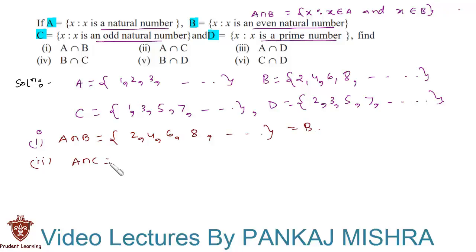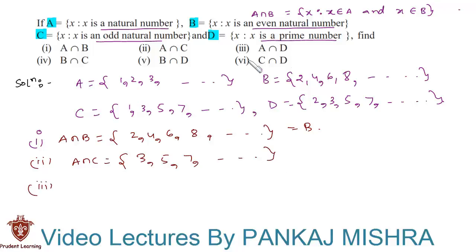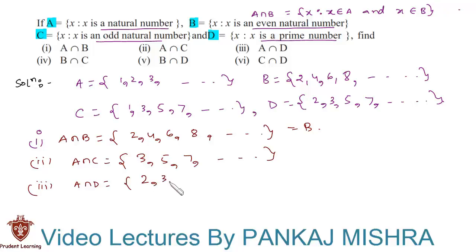In the next section we have A intersection C. The common elements between set A and set C are 1, 3, 5, 7, and so on. In the third section we have A intersection D. Here, except 1, all the remaining elements are common, so A intersection D contains 2, 3, 5, 7, and so on.